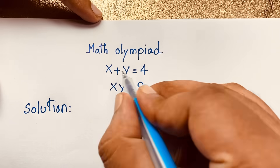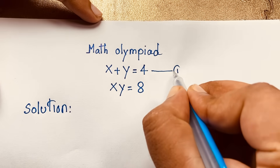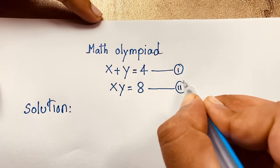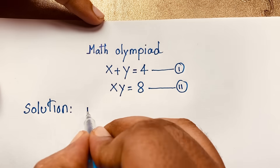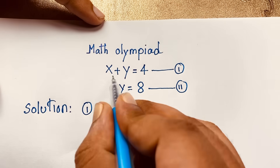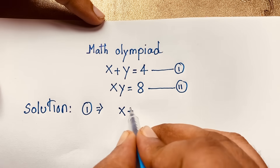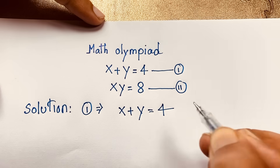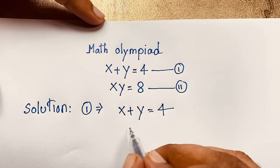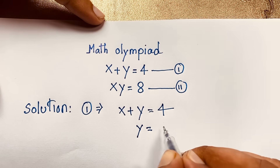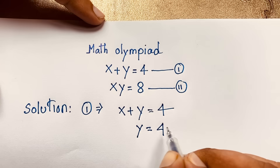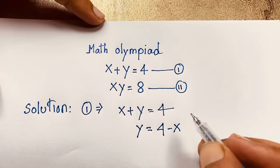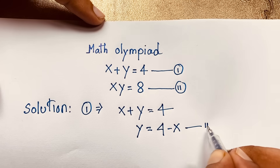This is our first equation, and this is our second equation. First of all, we take our first equation. Our first equation is x plus y is equal to 4. From this, y is equal to 4 minus x — I move the x to the other side, so it becomes negative x. This is our third equation.